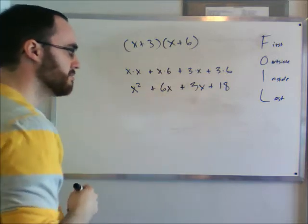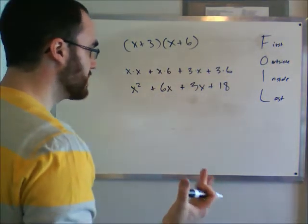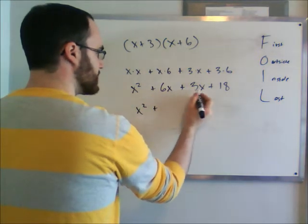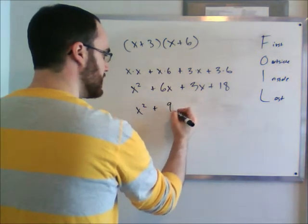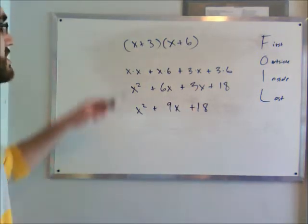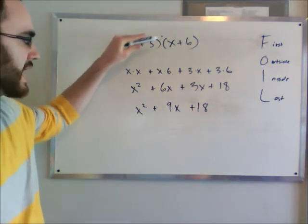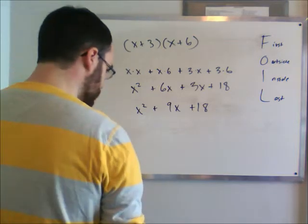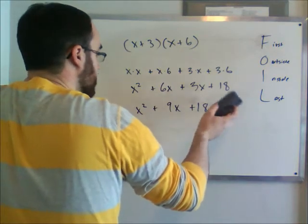Of course, these are the same power of x, x to the 1, so we can say x squared plus 9x plus 18. So that's how you take two binomials and multiply them out to find out what they're actually equal to in terms of the regular expanded product.